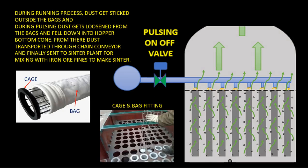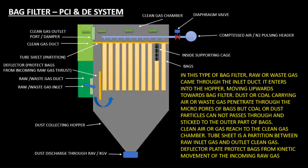During the running process, dust gets stuck to the outside of the bags. During pulsing, dust gets loosened from the bags and falls down into the hopper bottom cone. From there, dust is transported through a chain conveyor and finally sent to the Sinter plant for mixing with iron ore fines to make Sinter.